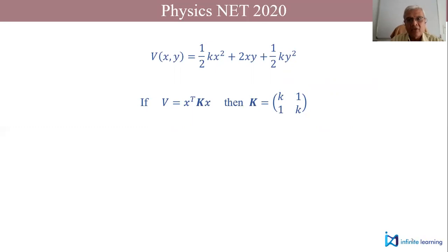The column vector will have first element x and the second row element will be y. If you do that, your potential energy will actually look like what you see in front of you on the screen. In that case, your K matrix will look like [[k, 1], [1, k]].